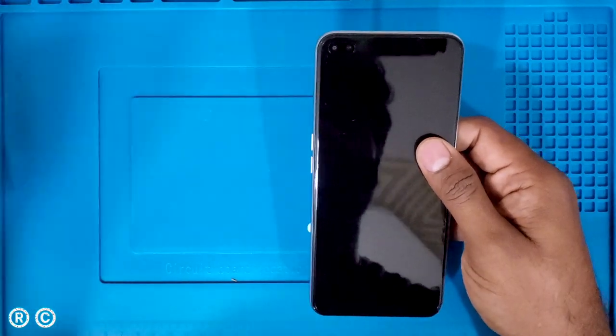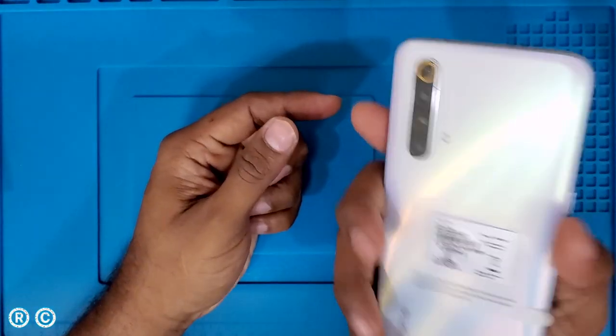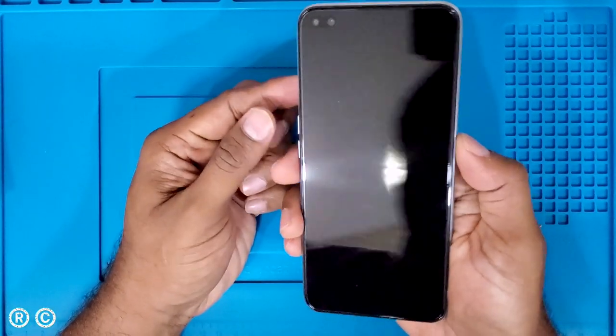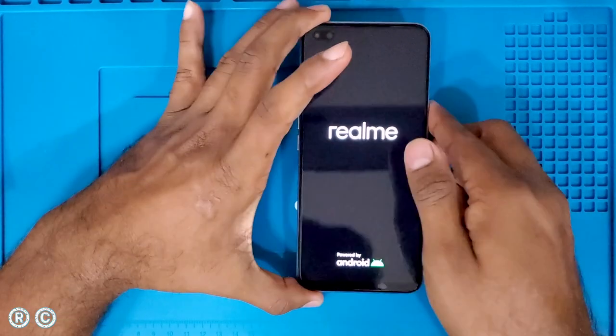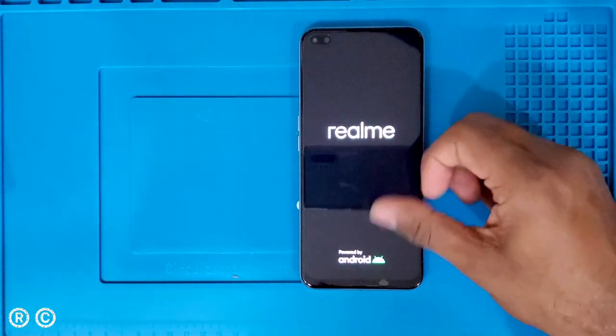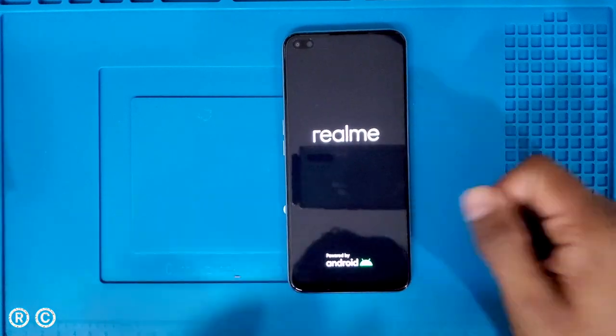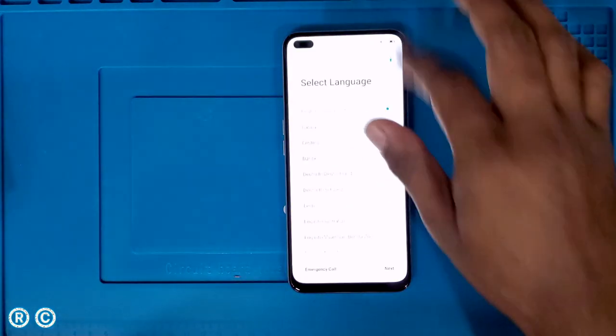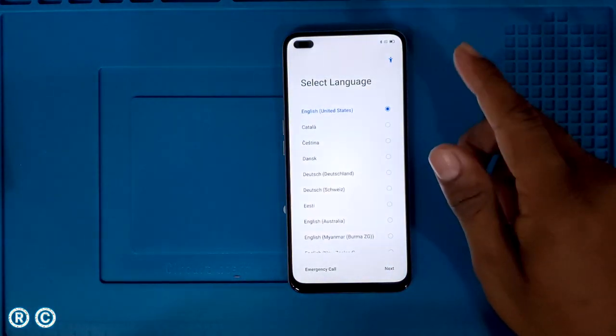On the front we have dual selfie cameras - 16MP and 8MP. Let's quickly turn it on. Once you turn it on, the Realme logo appears. Let me complete the setup, friends.